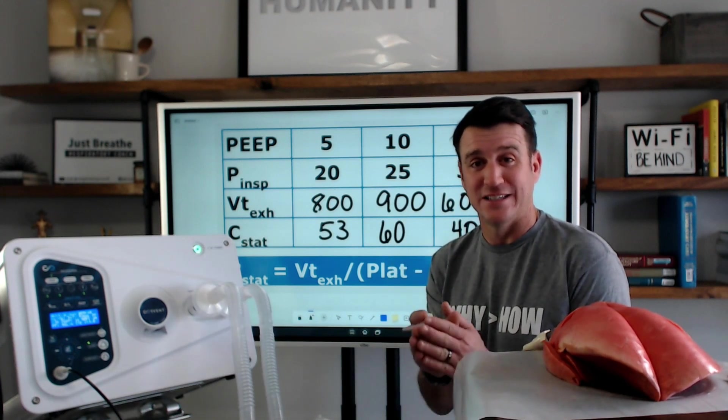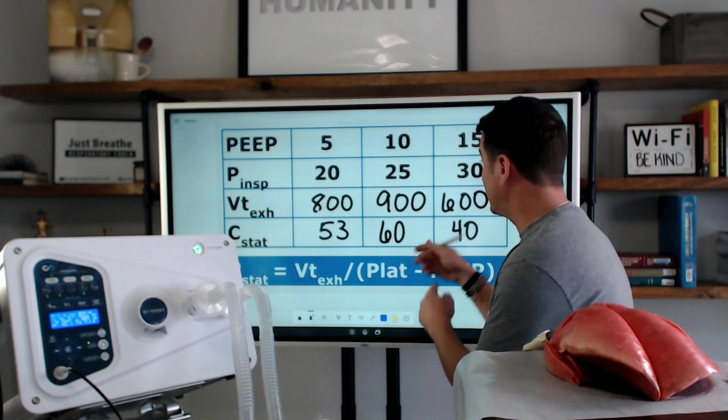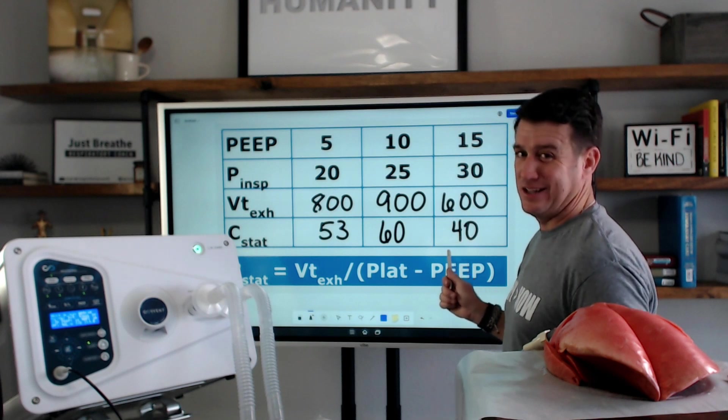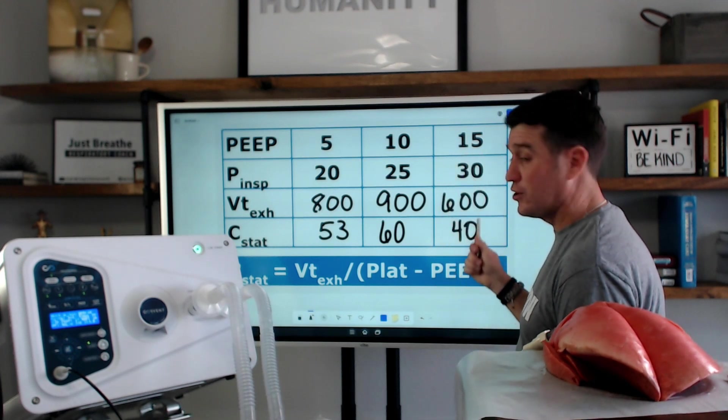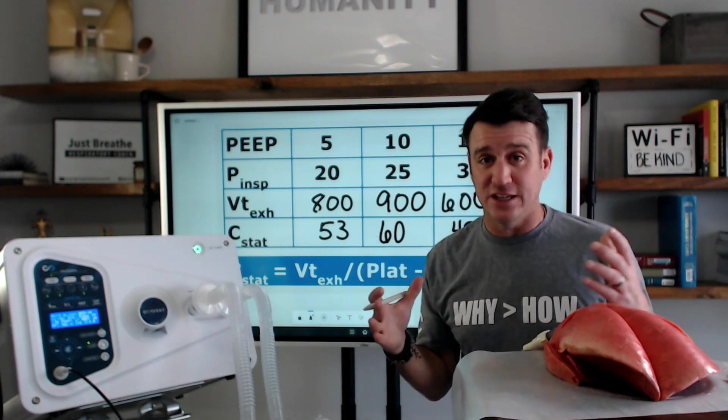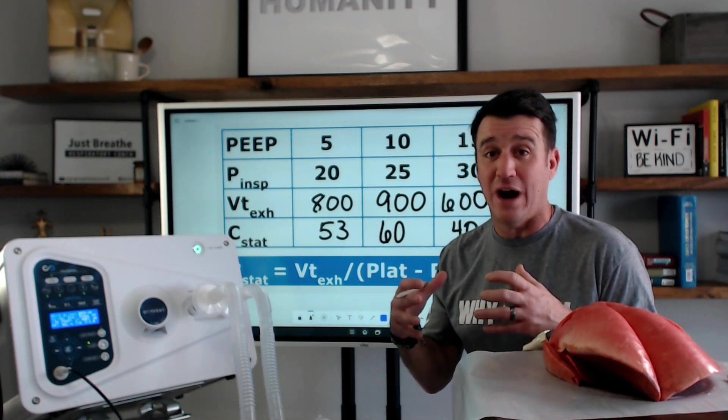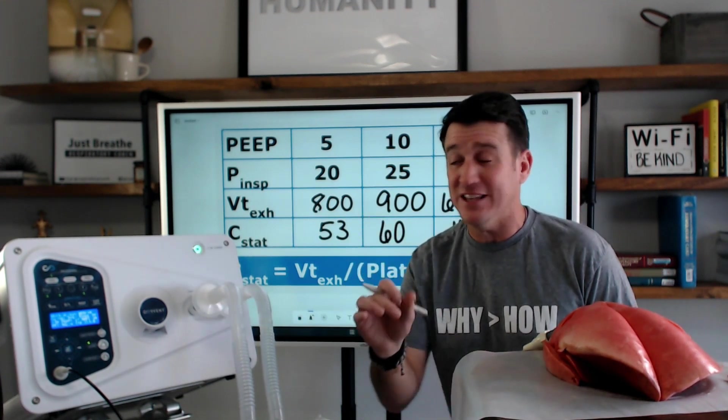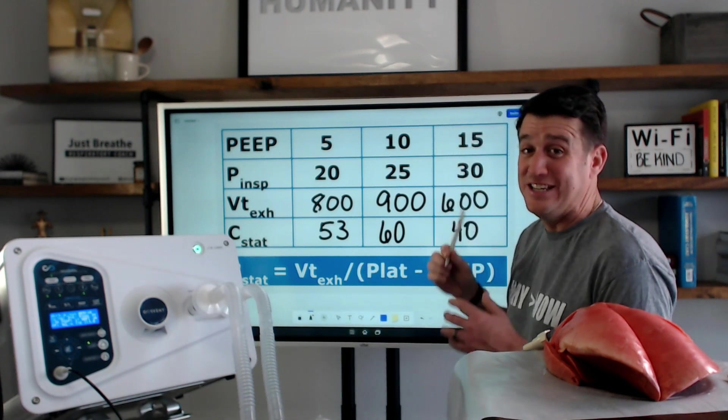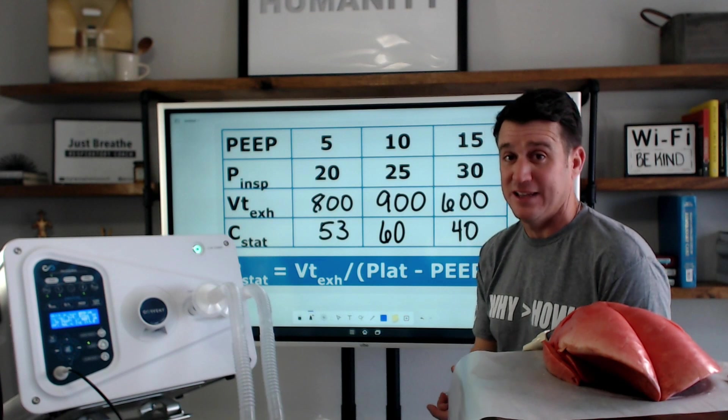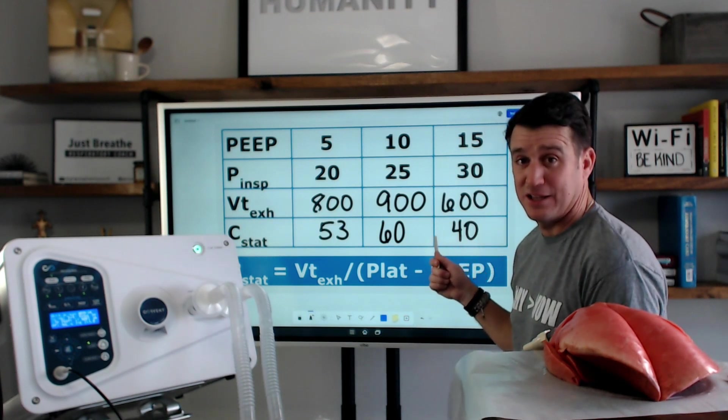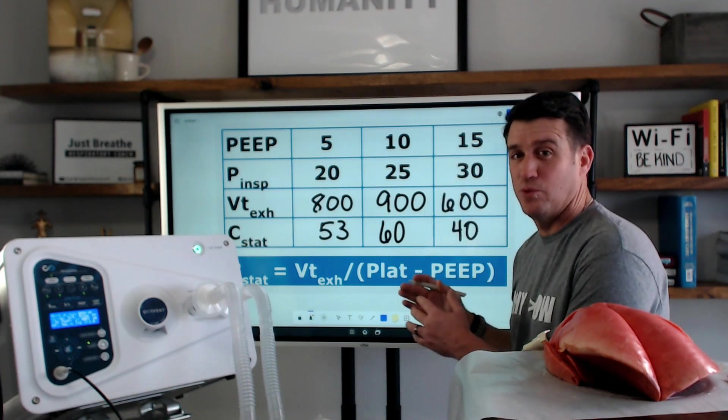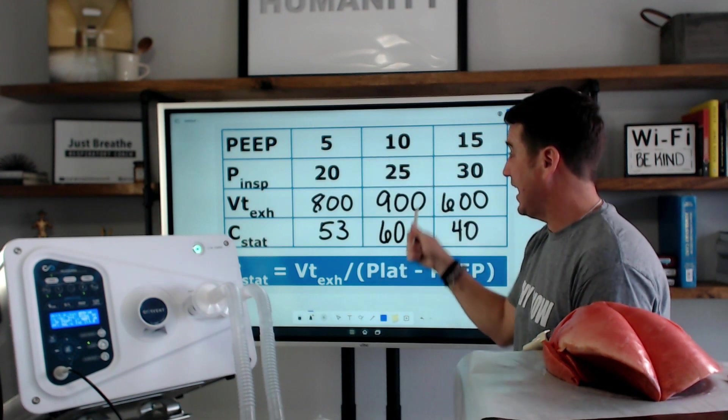When we look at 15, we see we get a reduction in static compliance. So, what does this tell us? This tells us that we have now entered into a state of over-distention. We are now holding the lungs open too high and putting too much volume in on top of that. And it is telling us, wait a second, this PEEP level of 15 does not help us increase compliance. It actually leads to a reduction in compliance. So, we would not want to leave this patient on the PEEP of 15. We would want to turn them back to where we know the safe and best static compliance was.